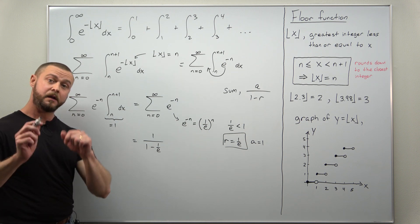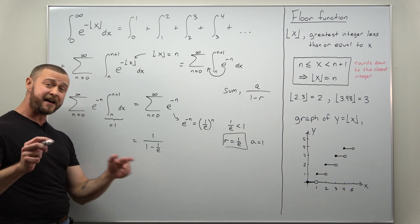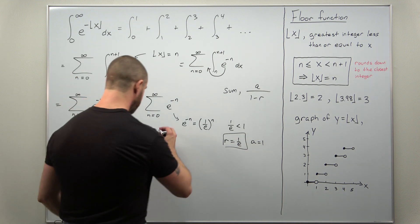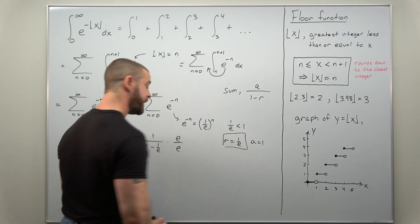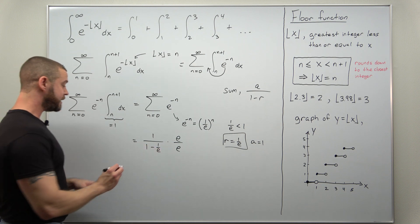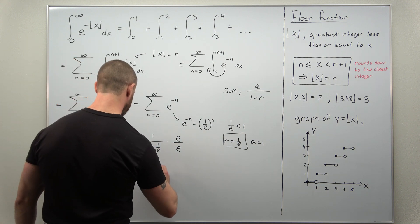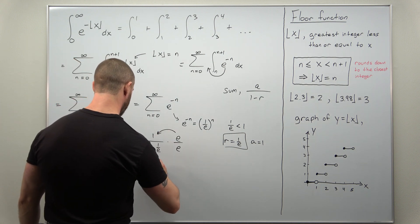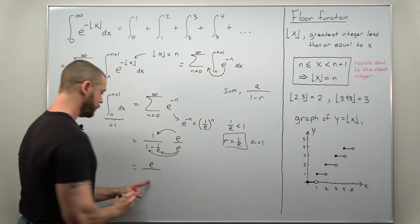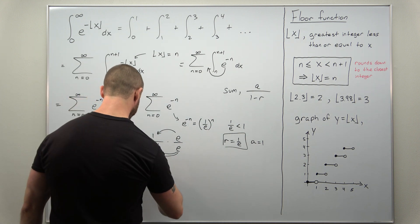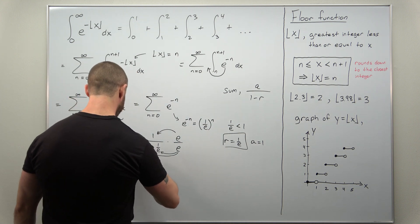And there we go. Now we can clean this up a little bit. I don't like having fractions within fractions. So I'm going to multiply the numerator by e and the denominator. And if you go ahead and distribute, our numerator here will become e. And if we distribute this e in the denominator there, we get in our denominator e minus 1.